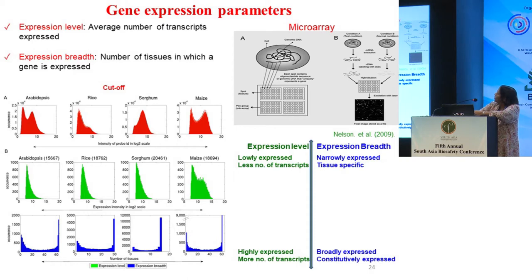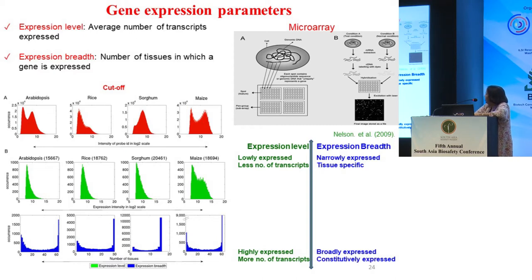Those are the properties of the DNA, and what one is trying to correlate them with is gene expression parameters. The two properties we looked at are expression level — the average number of transcripts expressed for a particular gene — and expression breadth — the number of tissues in which a gene is expressed. The four plants we've looked at are Arabidopsis, rice, sorghum, and maize, for which data is available. We try to correlate the structural properties and compositional properties with expression level and expression breadth.